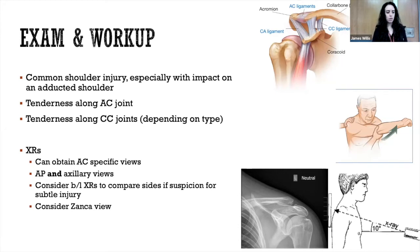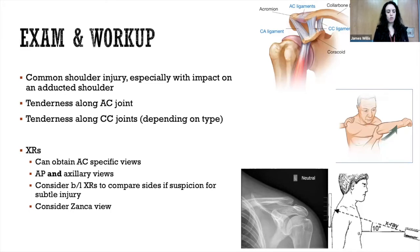If you have high suspicion for an AC injury, you can get AC-specific X-ray views. The benefit is slightly less radiation penetration, and regular shoulder X-rays can sometimes overexpose that specific joint, making it harder to assess joint space distances. You want AP and axillary views — we'll talk later about why that's so important. Also consider bilateral X-rays, since this joint space is variable between people, and you may need both sides to compare for significant widening. Also consider a Zanca view, which is essentially the AP view angled slightly to highlight the joint space.